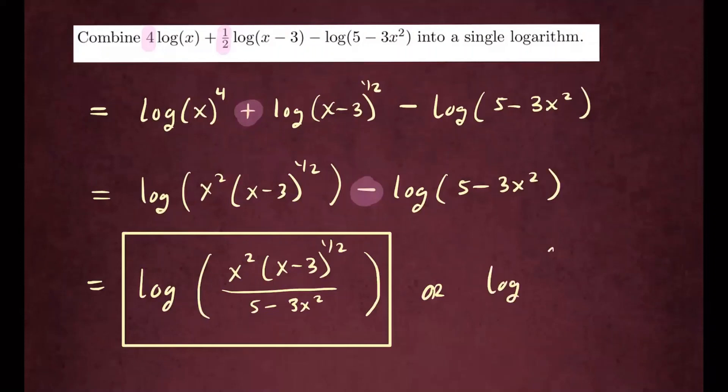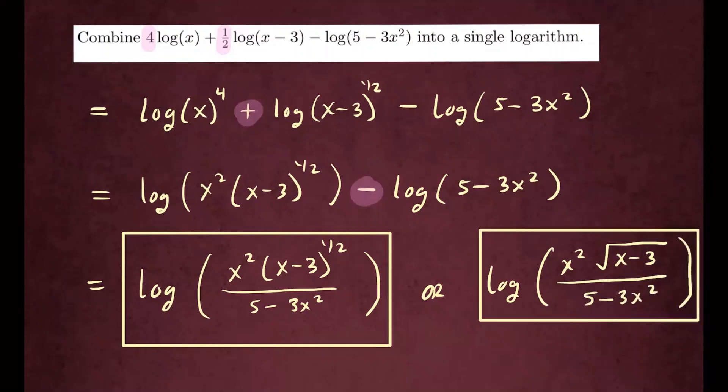So you can write this as also log of x to the fourth times square root of x minus three, all over five minus three x squared. So that will be another way we can write the same answer. I hope this helps.